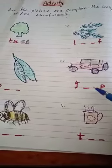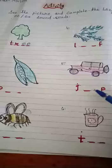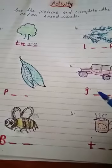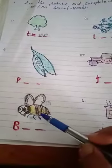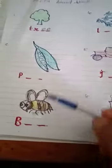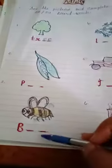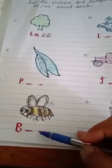So complete the word with double e sound, okay. B, double e, bee sound, sorry double e sound, okay. You have to read the word bee.